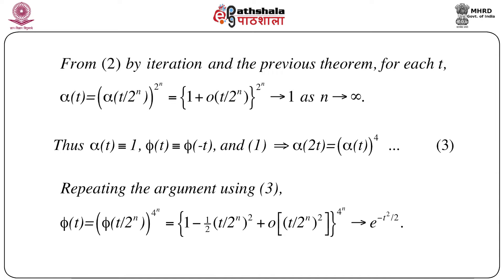Since α(t) → 1, meaning φ(t) is approximately equal to φ(-t), substituting back into equation 1 gives α(2t) = α(t)^4. Repeating the same argument with this new equation, we can write φ(t) = [φ(t/2^n)]^{4n}.